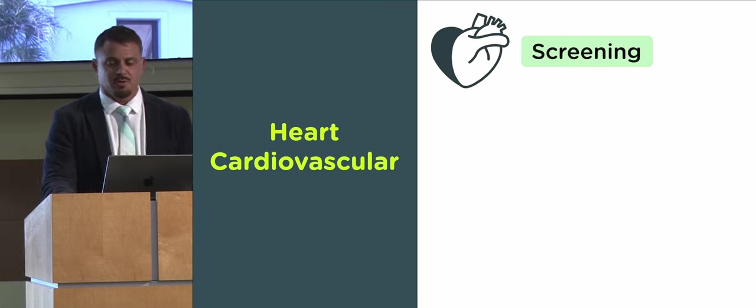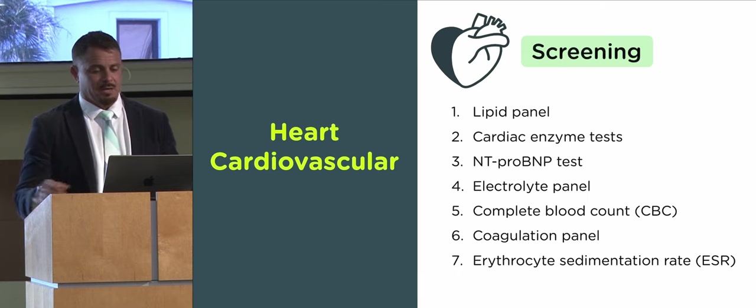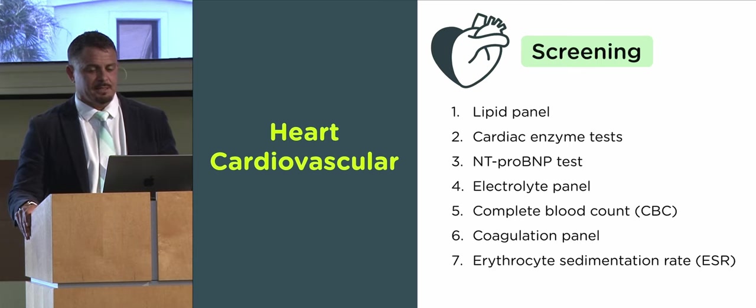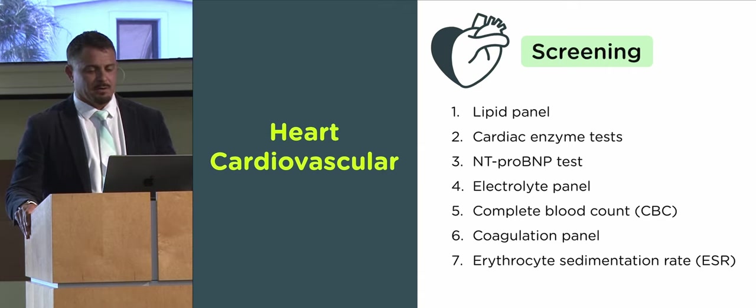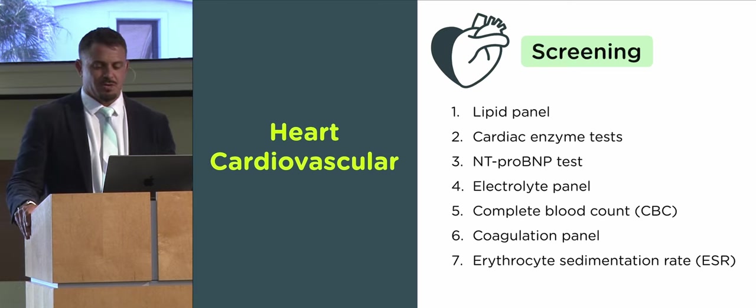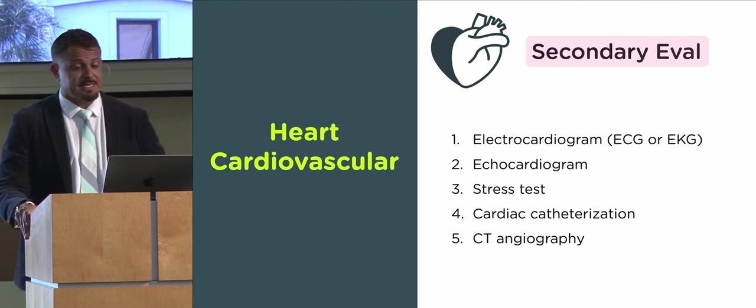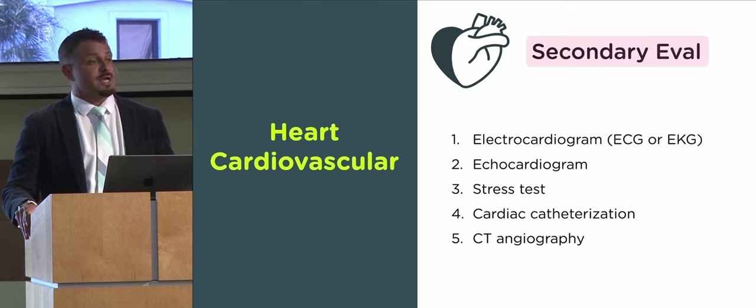What are some common medical labs to evaluate the health and functioning of the cardiovascular system? Screening can include a lipid panel, cardiac enzyme test, PT, NT pro, BPN tests, or natriuretic peptide tests, which measure the levels of a protein that can indicate heart failure. An electrolyte panel, complete blood count or CBC, coagulation panel, and erythrocyte sedimentation rate or ESR, which measures the rate at which red blood cells settle in a test tube, which can indicate inflammation in the body. If there's an issue detected in the screening, a secondary evaluation can include electrocardiograms, echocardiograms, cardiac stress tests, cardiac catheterization, CT angiographies, and others.